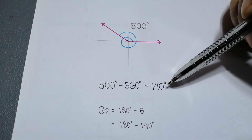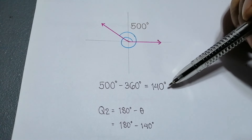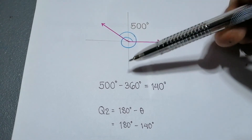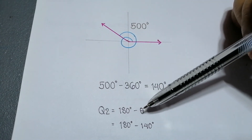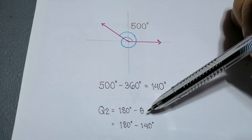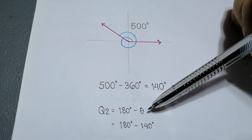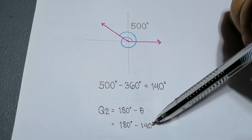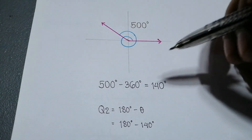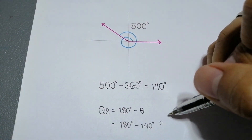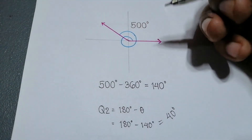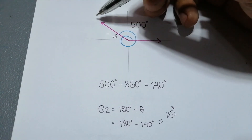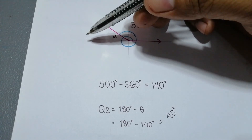Since we already have our coterminal angle of 140 degrees and we know that it is at the second quadrant, we can use the formula 180 degrees minus the given angle to get the equivalent reference angle. Subtracting 180 degrees by 140 degrees, our reference angle will be equal to 40 degrees. This is the acute angle formed by our terminal side with respect to the negative x-axis.